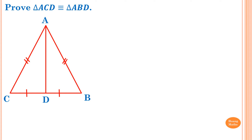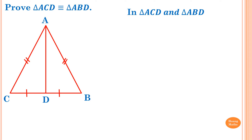For example, prove triangle ACD is congruent to triangle ABD. These are the steps to follow. Step one — very important — we write this statement first: 'In triangle ACD and triangle ABD.' We write 'and' because we cannot write congruent yet; we have to prove the two triangles congruent first.